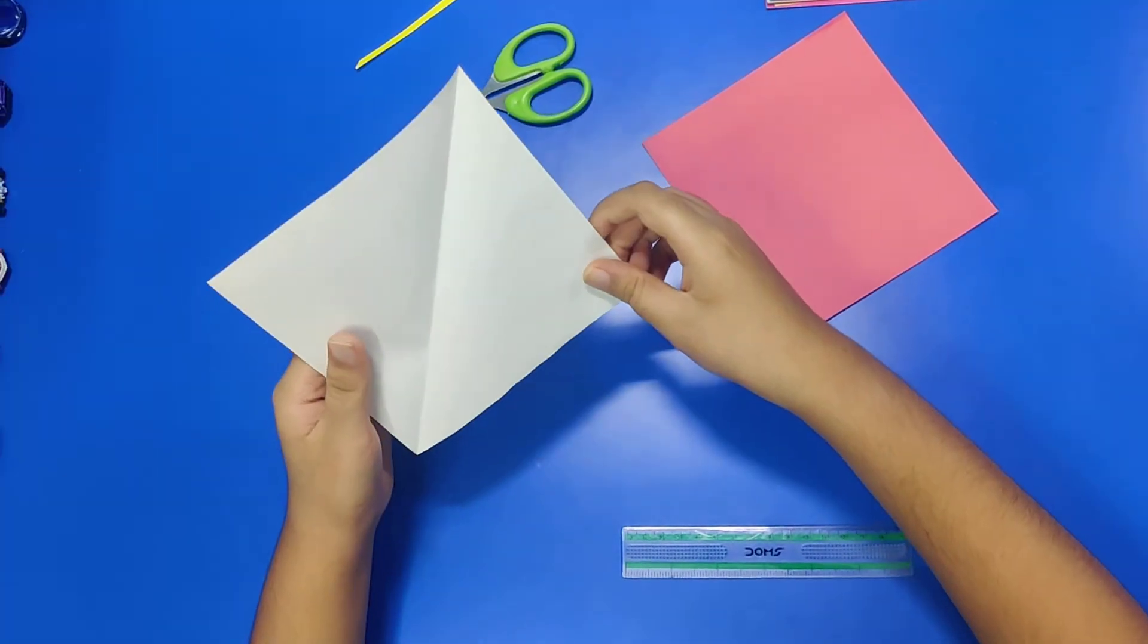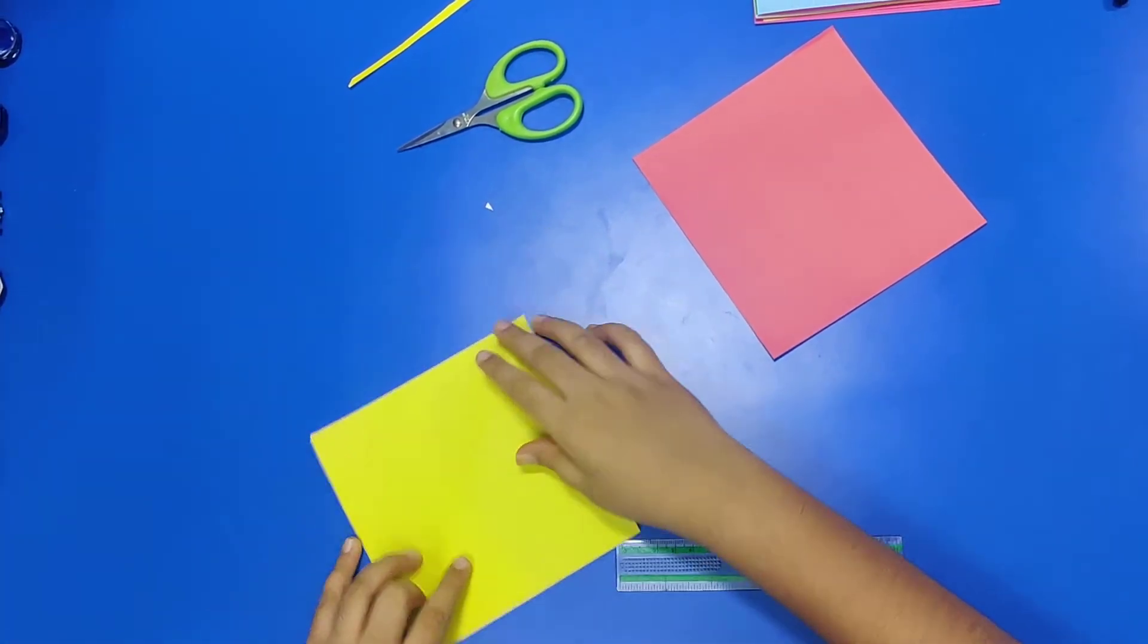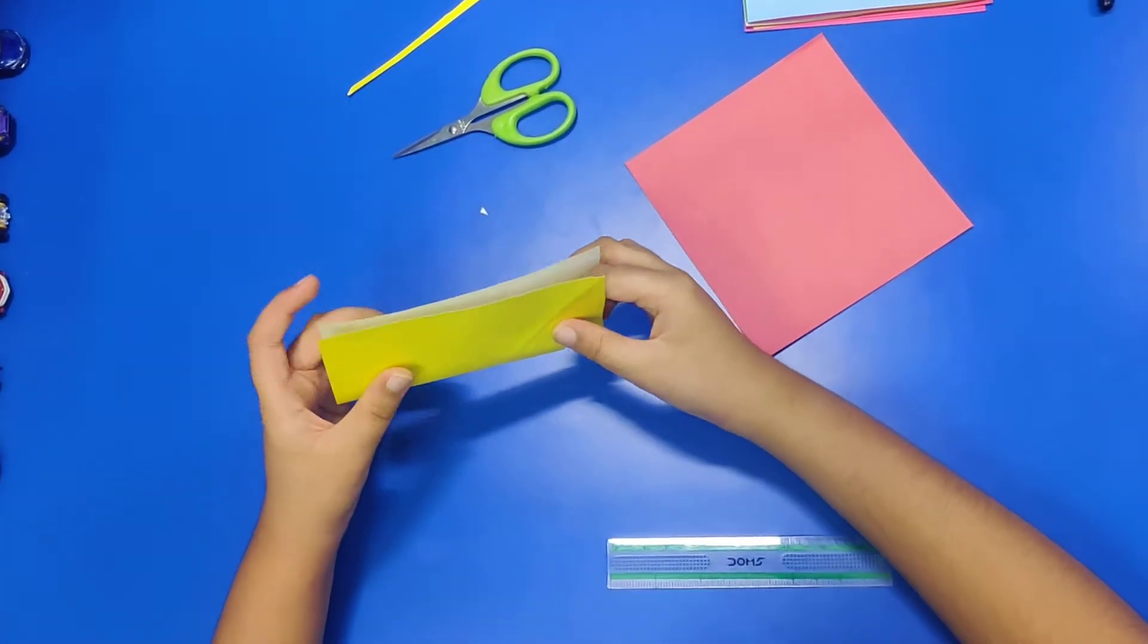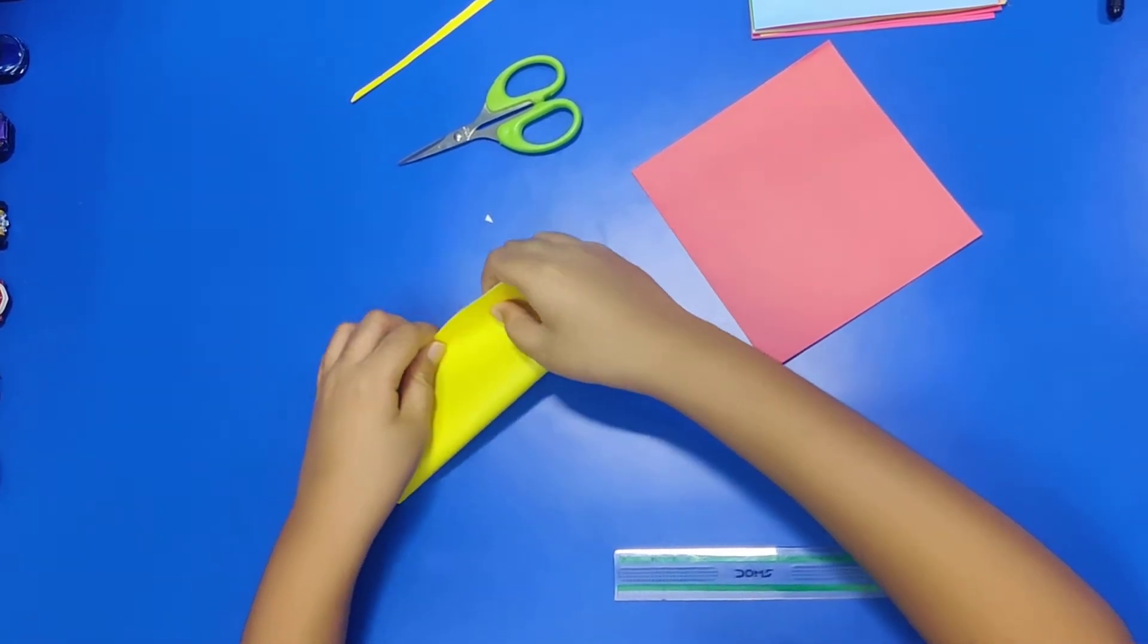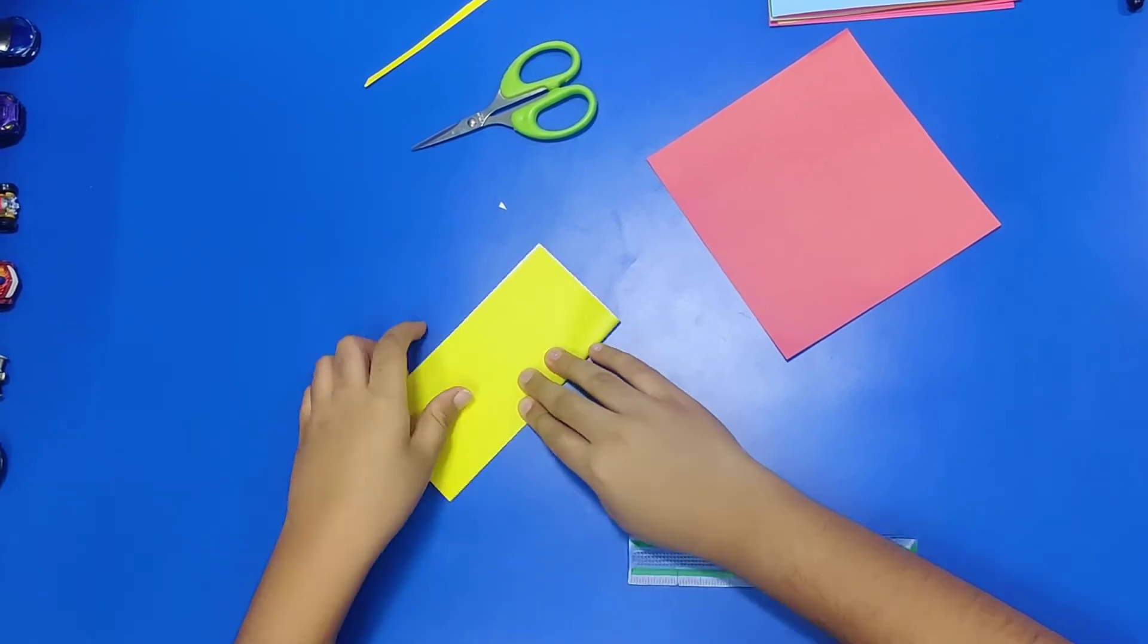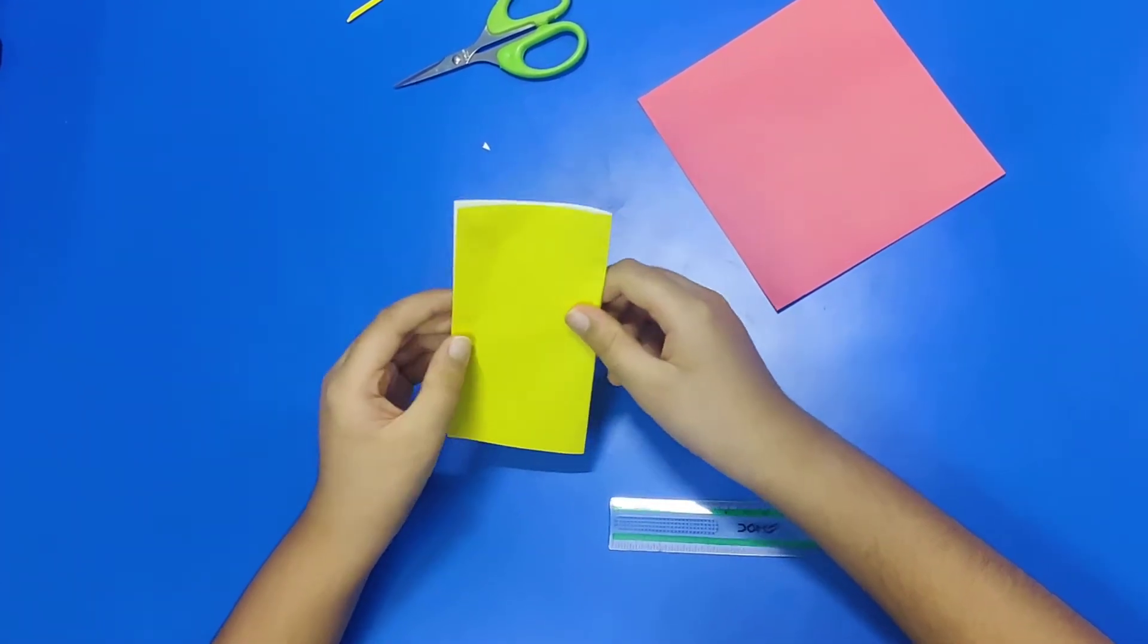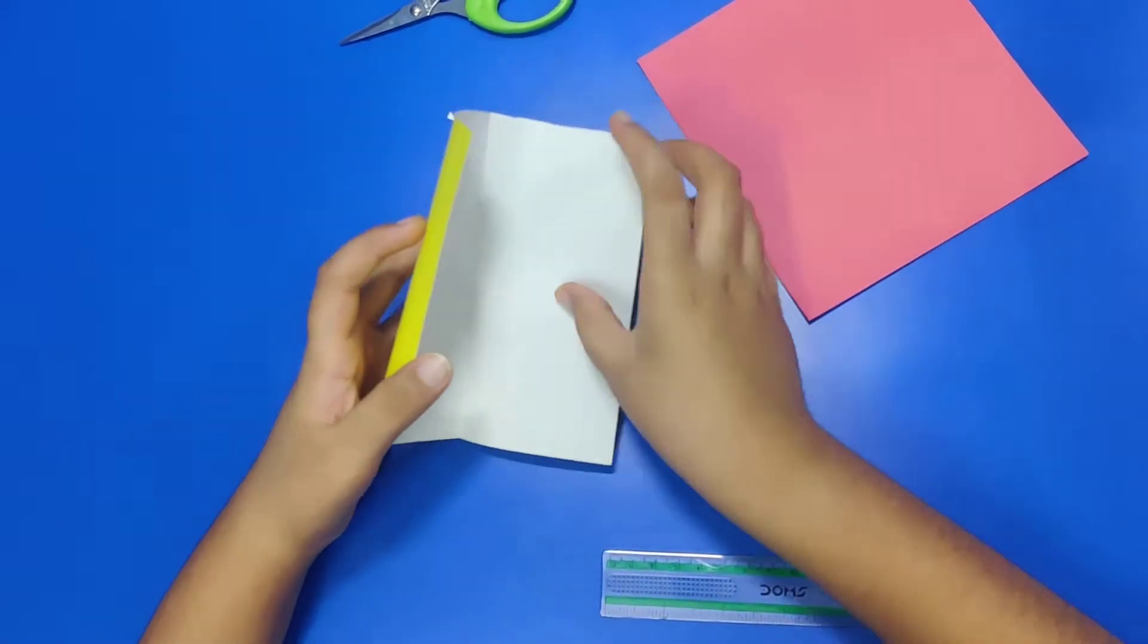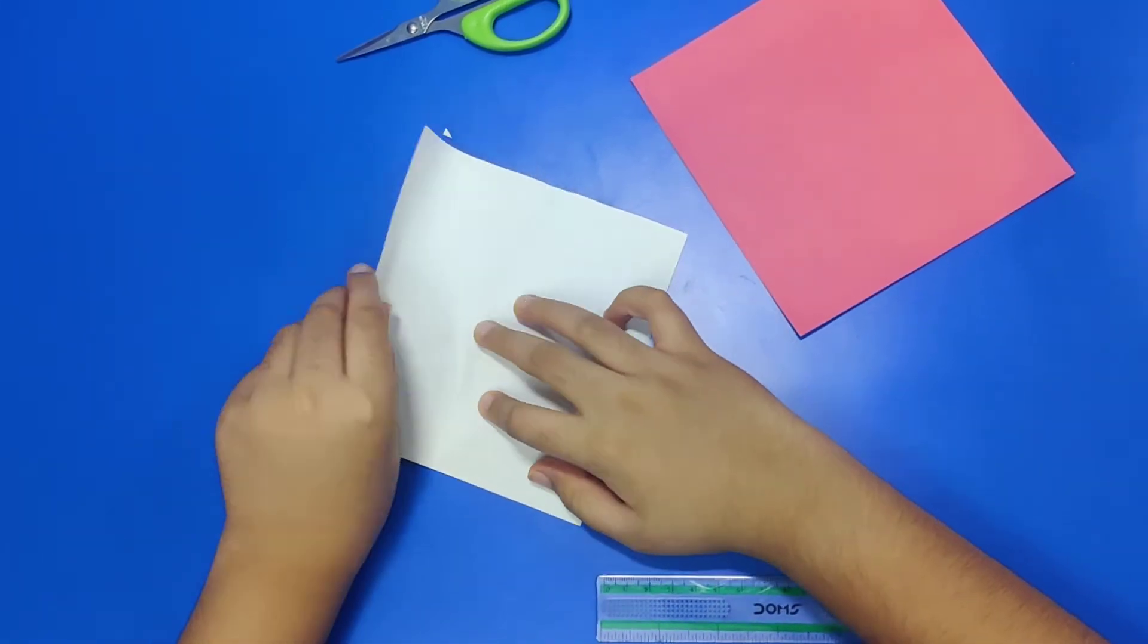And now unfold the paper. Now, fold it in half. And then unfold it. So you should get a line, middle line.